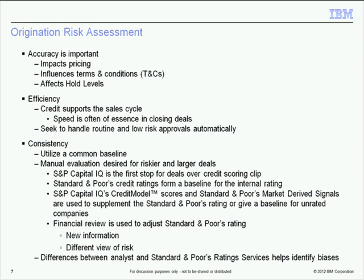Moving on to origination risk. The accuracy in assigning the risk rating is very important. Our pricing with customers for financing is tied to that risk rating — we want to price correctly for the risk and be competitive, so we don't want a conservative or liberal bias in our ratings. The ratings also influence the terms and conditions we offer customers — we may shorten or lengthen the deal term or change security requirements based on the risk rating. It also affects hold levels, so we do not become overly concentrated in any one customer or industry.